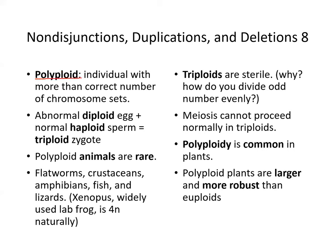Polyploidy refers to an individual with more than the correct number of chromosomal sets. This can result from an abnormal diploid egg fertilized by a normal haploid sperm, creating a triploid zygote. Polyploid animals are rare, but flatworms, crustaceans, amphibians, fish, lizards, and Xenopus (the commonly used lab frog) are naturally tetraploid.